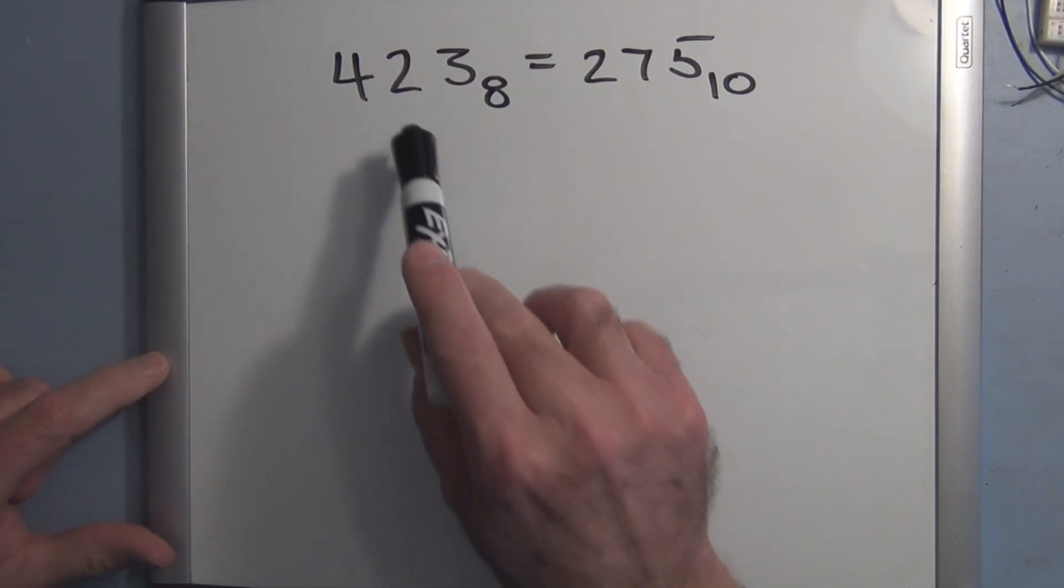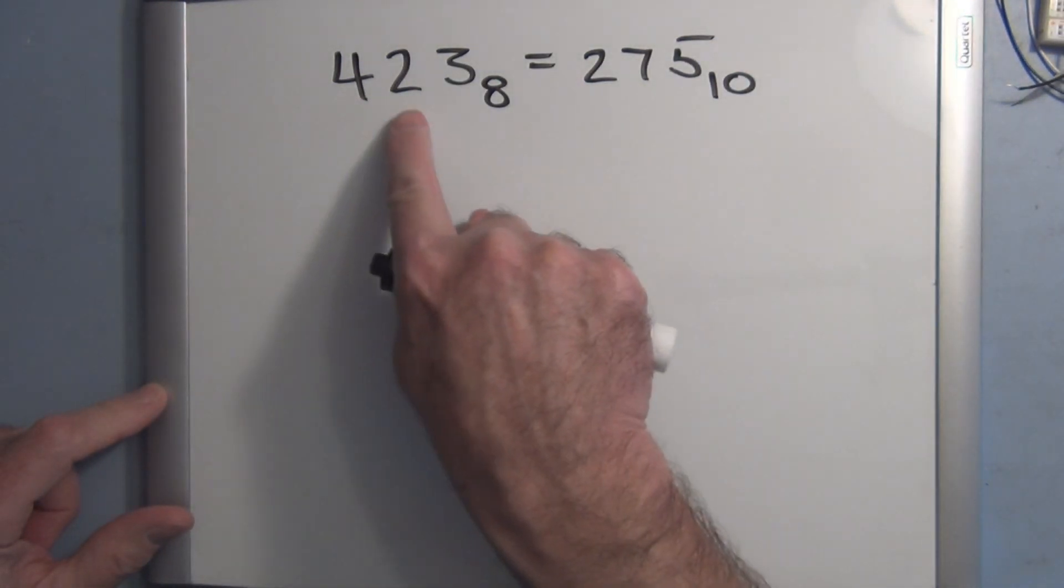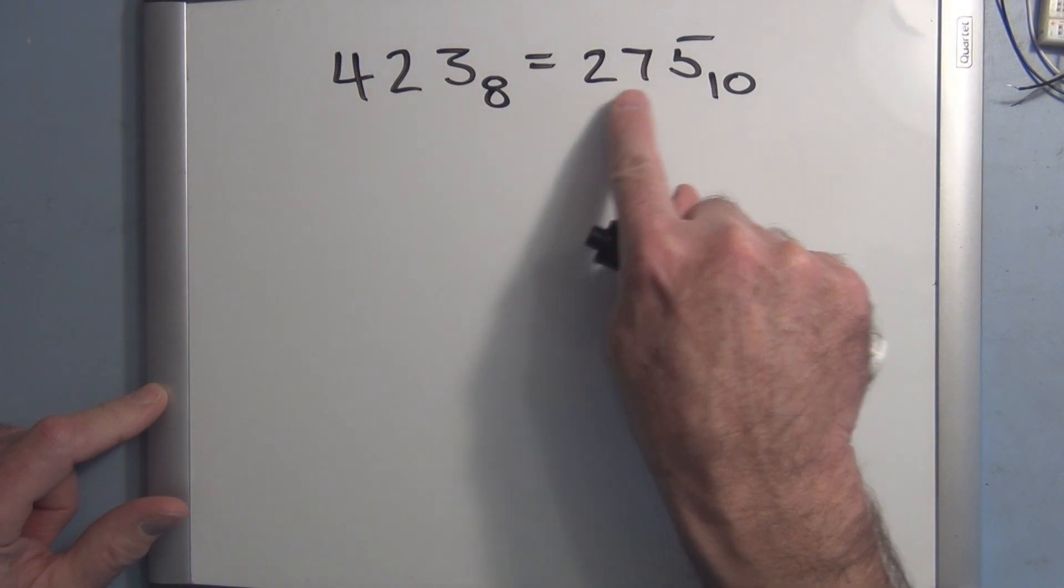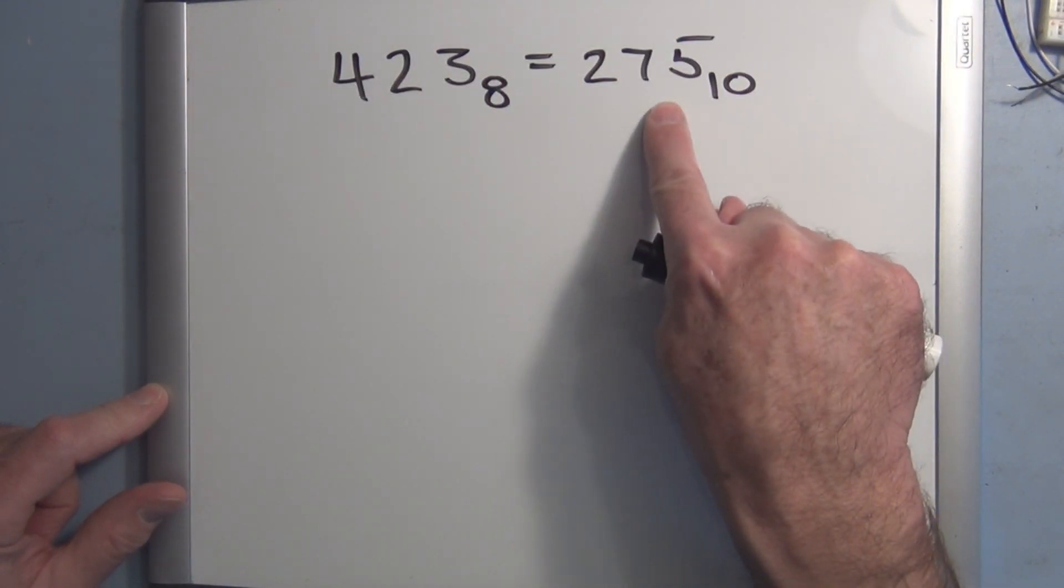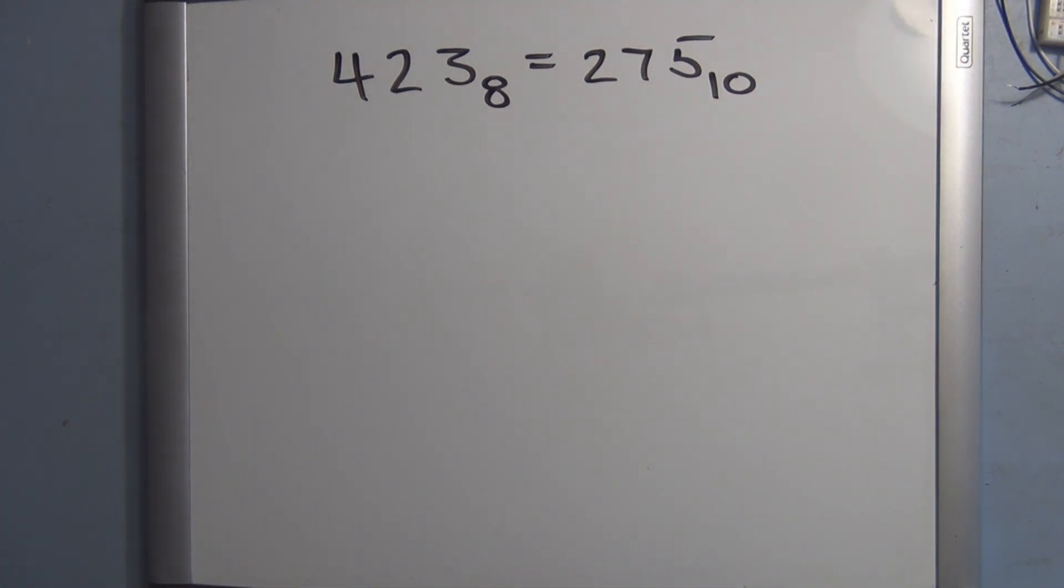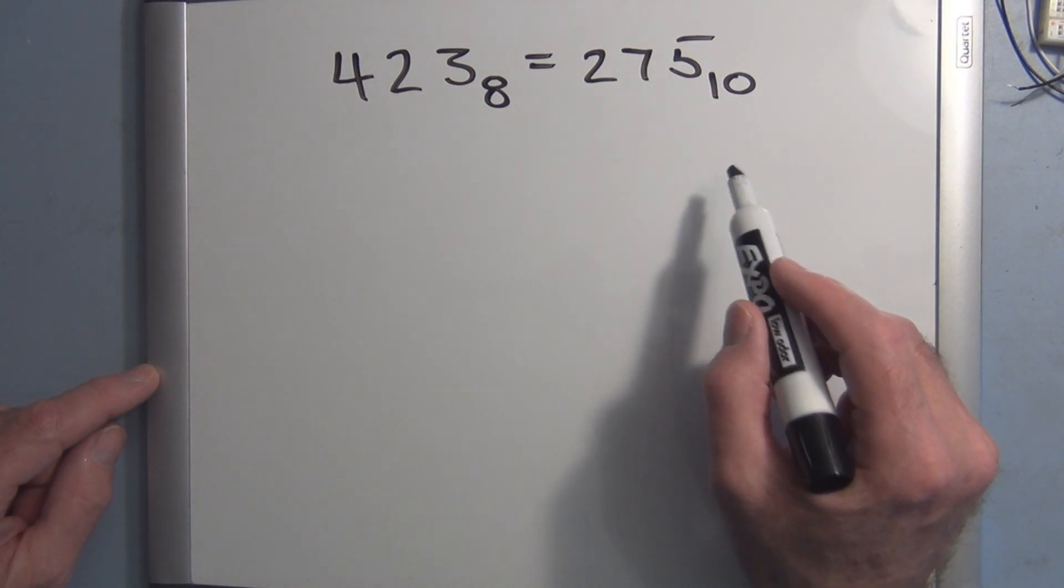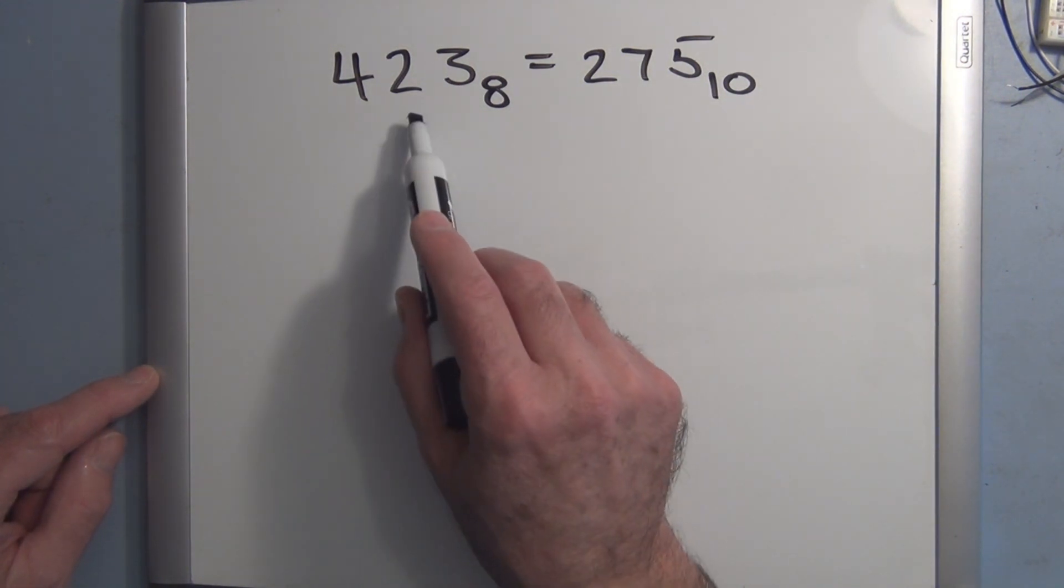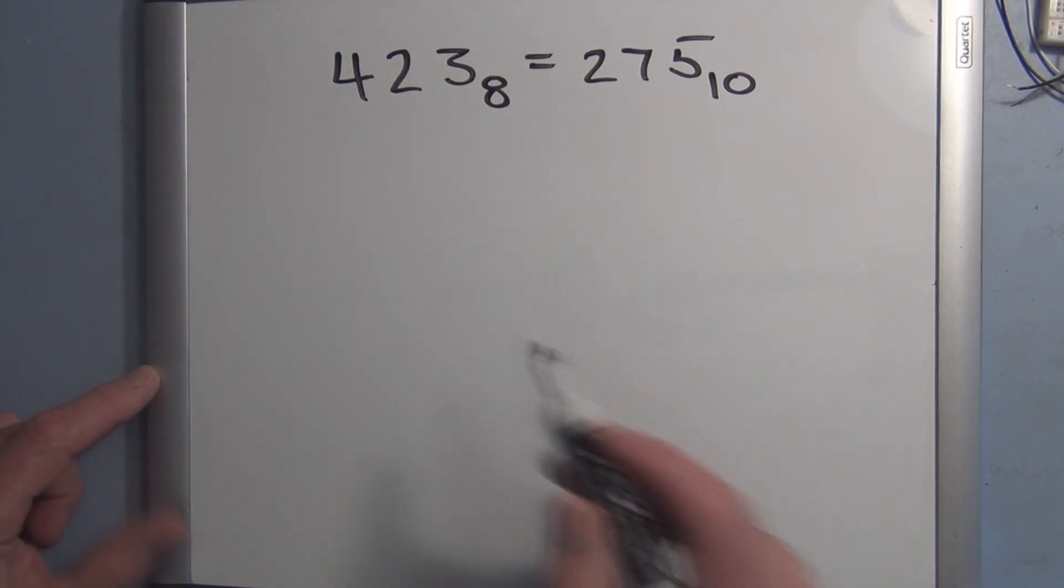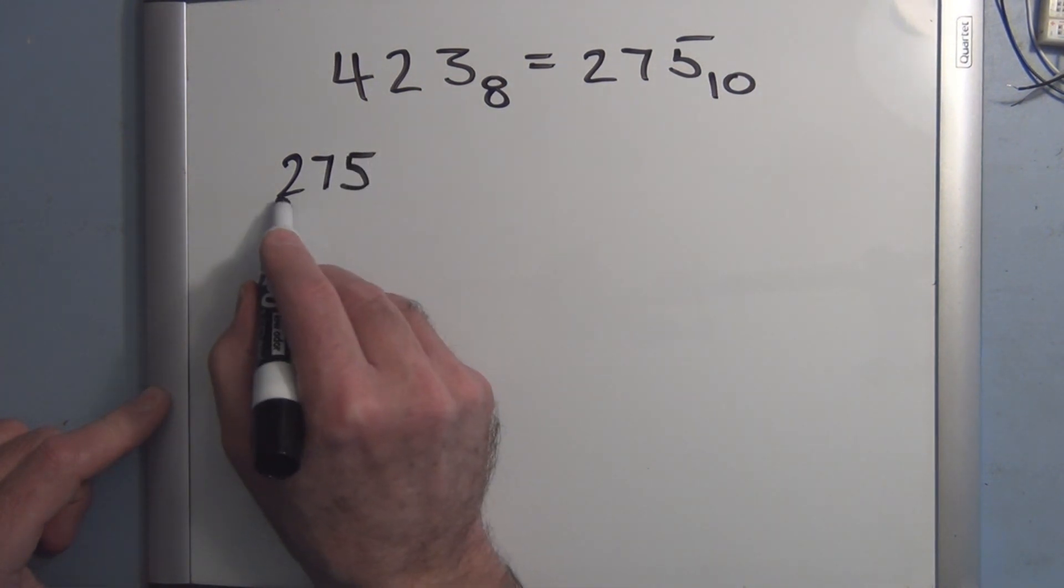So we know how to convert an octal number to its decimal equivalent. In this case, we have 423 octal is equal to 275 decimal. But how do we go from a decimal number and convert it into its octal equivalent? Well, similar to binary, where we repeatedly divided by 2. In this case, the base is 8, so we repeatedly divide by 8, recording the remainders, and the remainders will make up the equivalent octal number. So we have 275 decimal divided by 8,